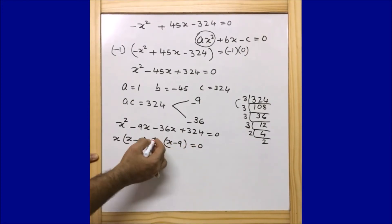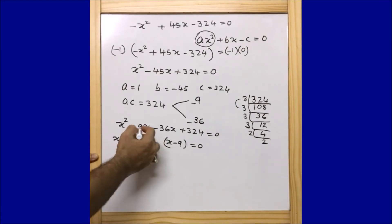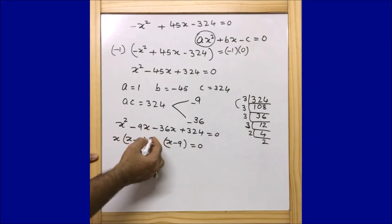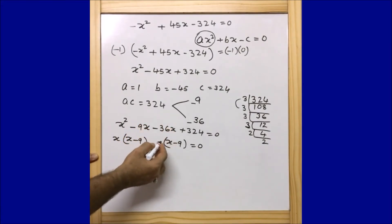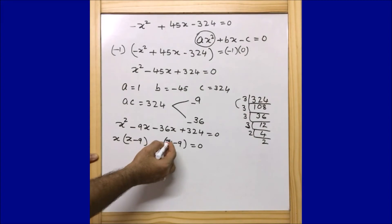Taking (x minus 9) as common — if I take minus 36 from the last pair: minus 36 times x is minus 36x, and minus 36 times minus 9 is plus 324. So we get the two factors: (x minus 36) and (x minus 9).